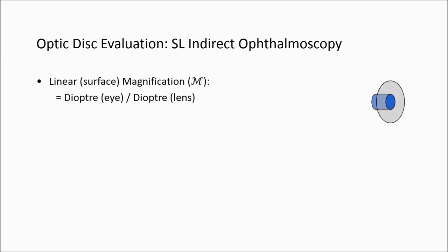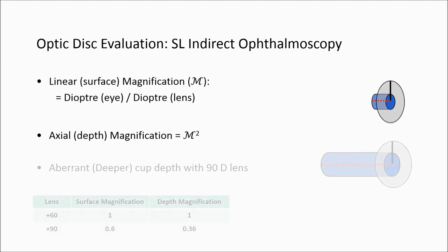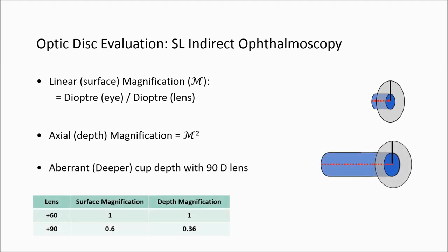Indirect ophthalmoscopy results in two types of magnification. The first is linear or surface magnification M, which is the result of dividing the dioptric power of the eye by the dioptric power of the lens — in the case of a plus 60 lens, it is 1. The second is axial or depth magnification M², which in the case of a 60-diopter lens is also 1, meaning equal magnification of both the surface and depth of the optic cup. With a 90-diopter lens, however, the virtual depth of the cup will be greater by 6 times than the surface, giving the illusion of a much deeper cup than it really is.